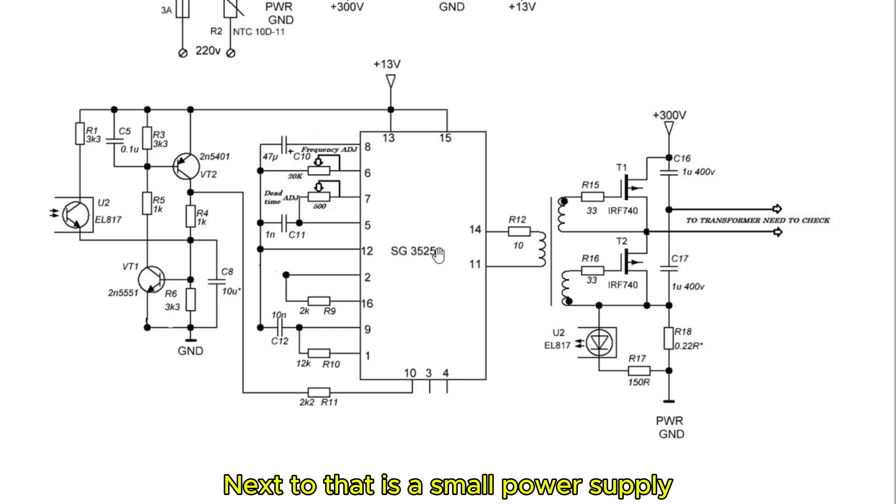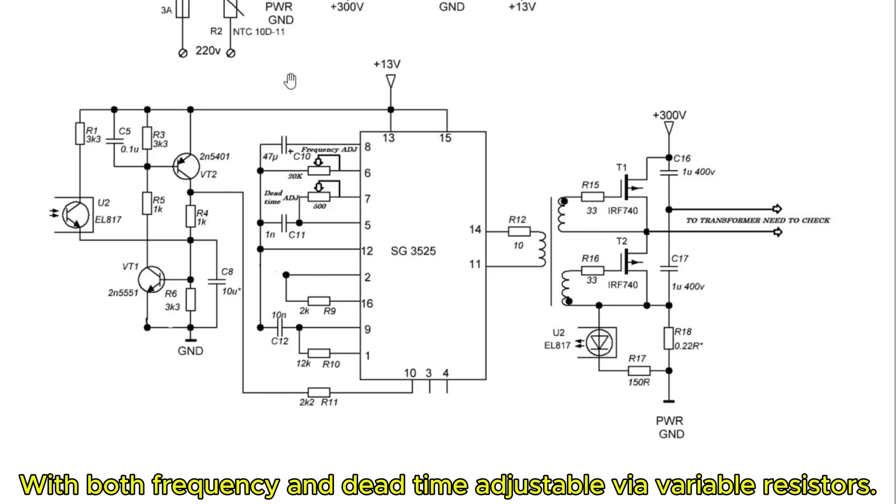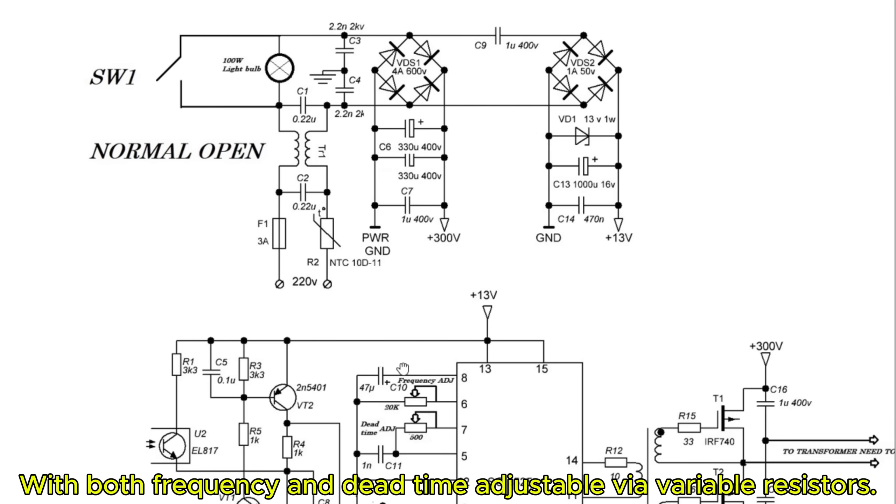Next to that is a small power supply around 13 volts to power the oscillator IC. The main oscillator uses the SG355-5 IC with both frequency and dead time adjustable via variable resistors.